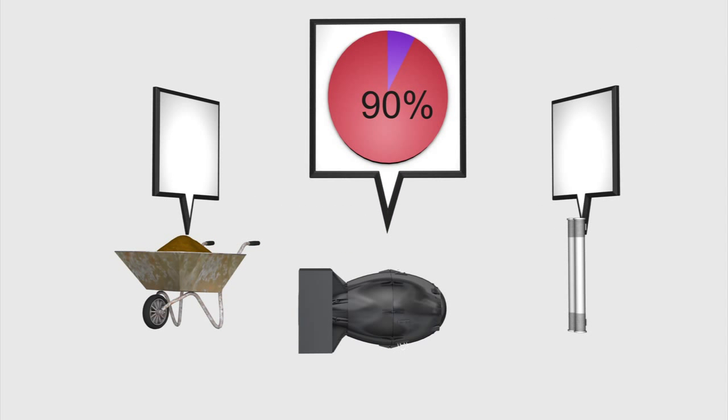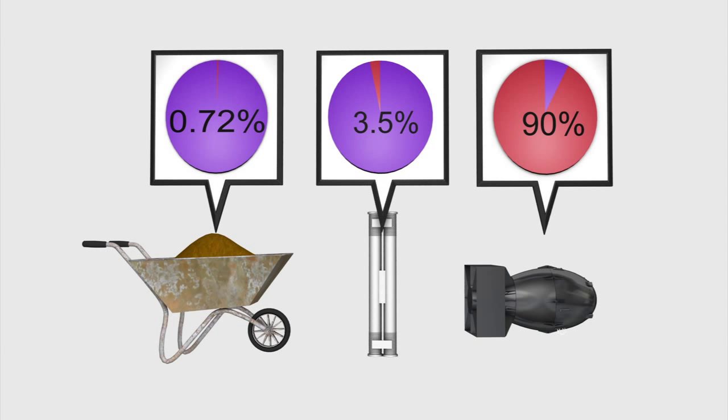The level of Uranium-235 isotope in uranium ore is 0.72%. It is 3.5% in nuclear plant fuel rods and 90% in nuclear bombs.